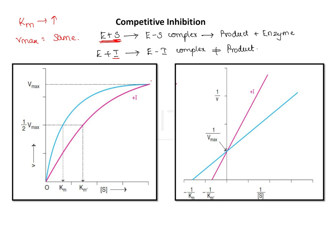Plotting competitive inhibition on a normal Michaelis-Menten curve gives two curves showing the same Vmax but different Km, as the curve with inhibitor shows an increased Km indicating decreased enzyme-substrate affinity. On a Lineweaver-Burk plot, the x-intercept changes while the y-intercept (1/Vmax) remains the same. Therefore, both slopes intersect at the same y-axis point but at different x-axis points. This is the graphical representation to remember for competitive inhibition.